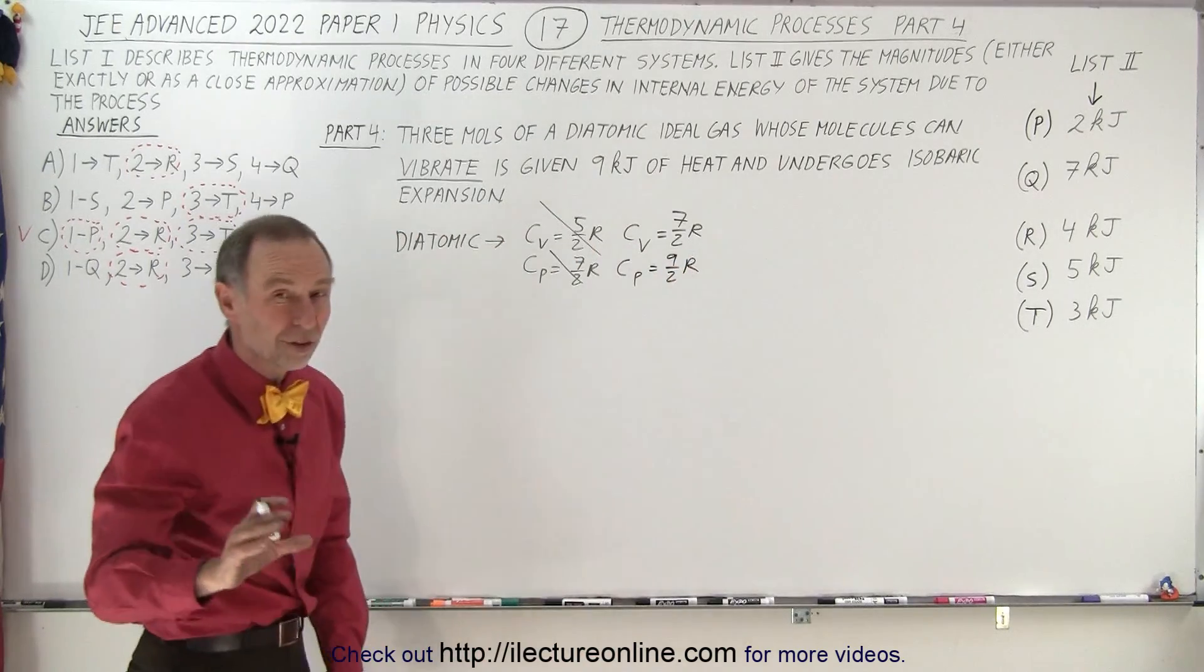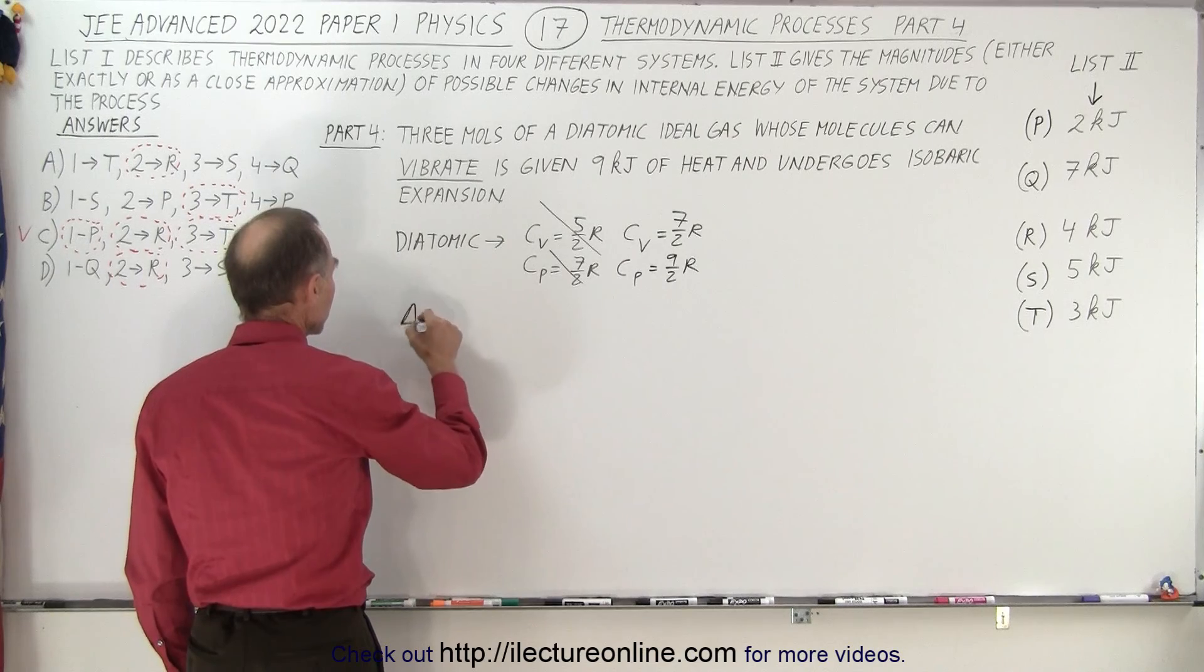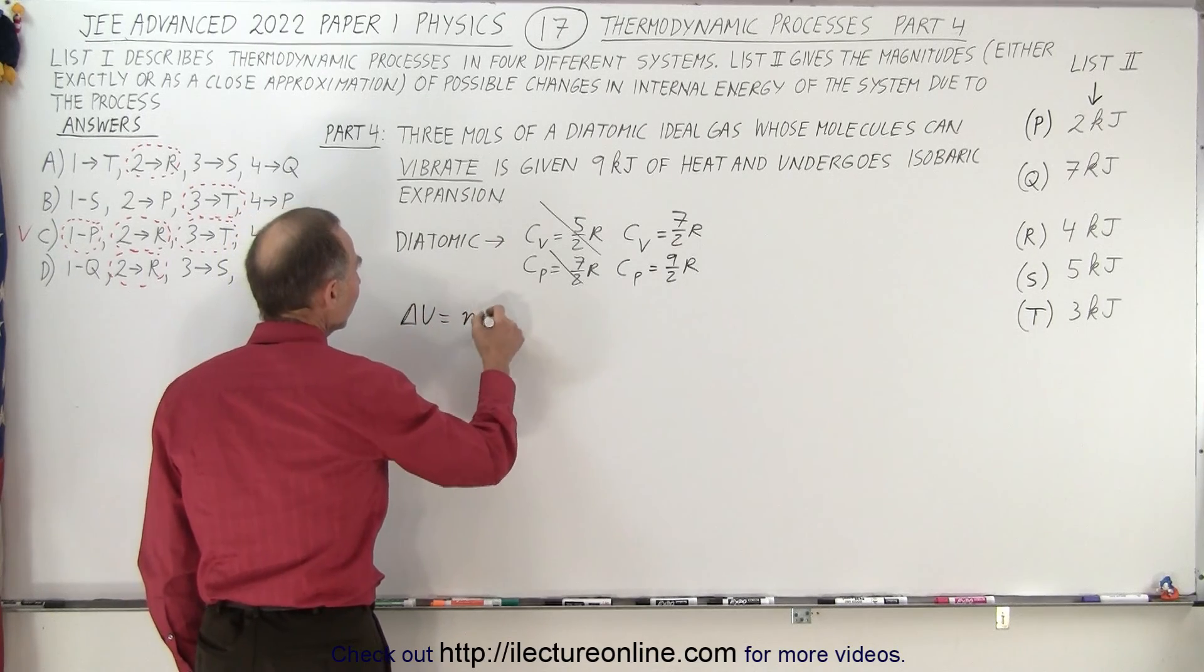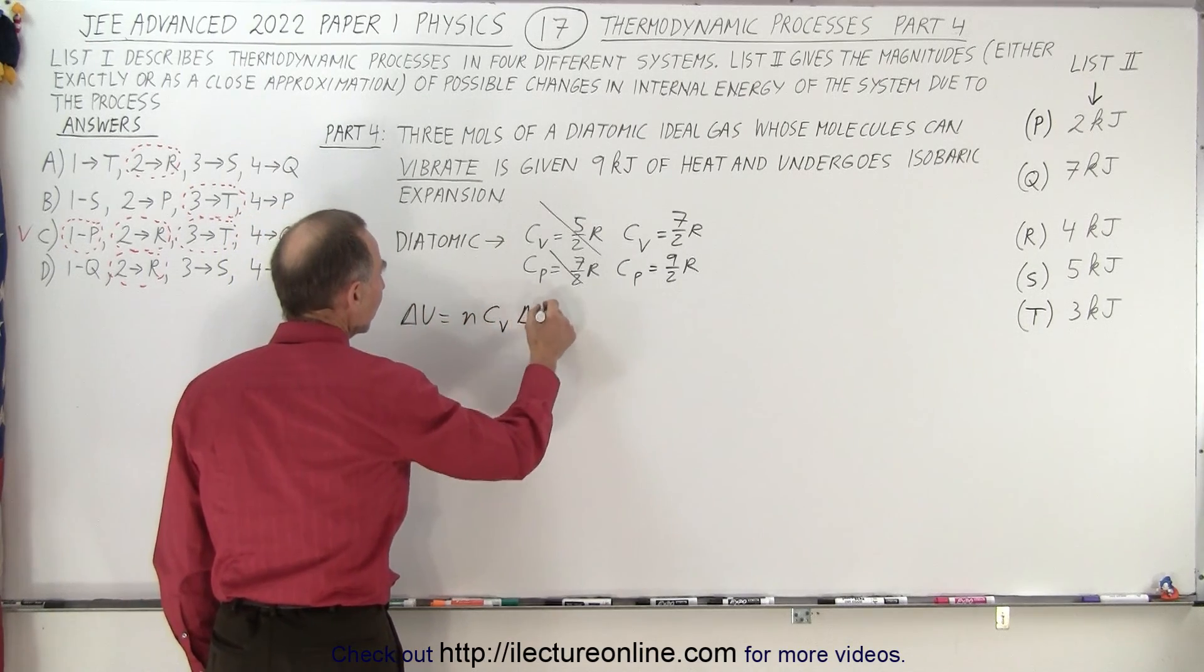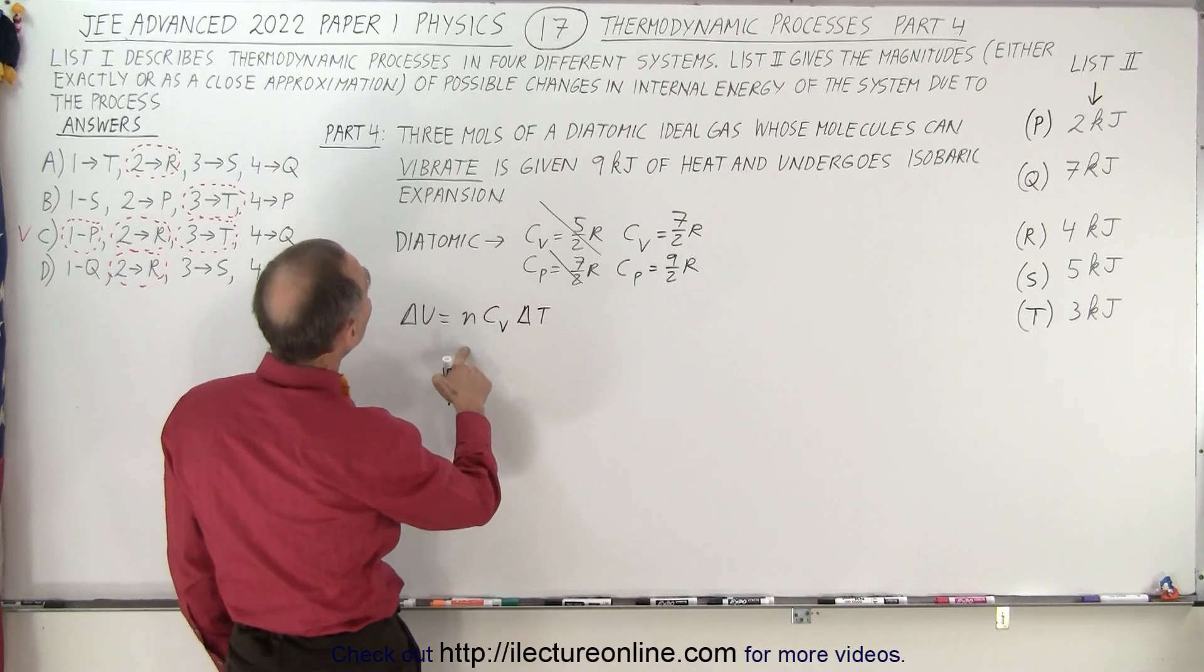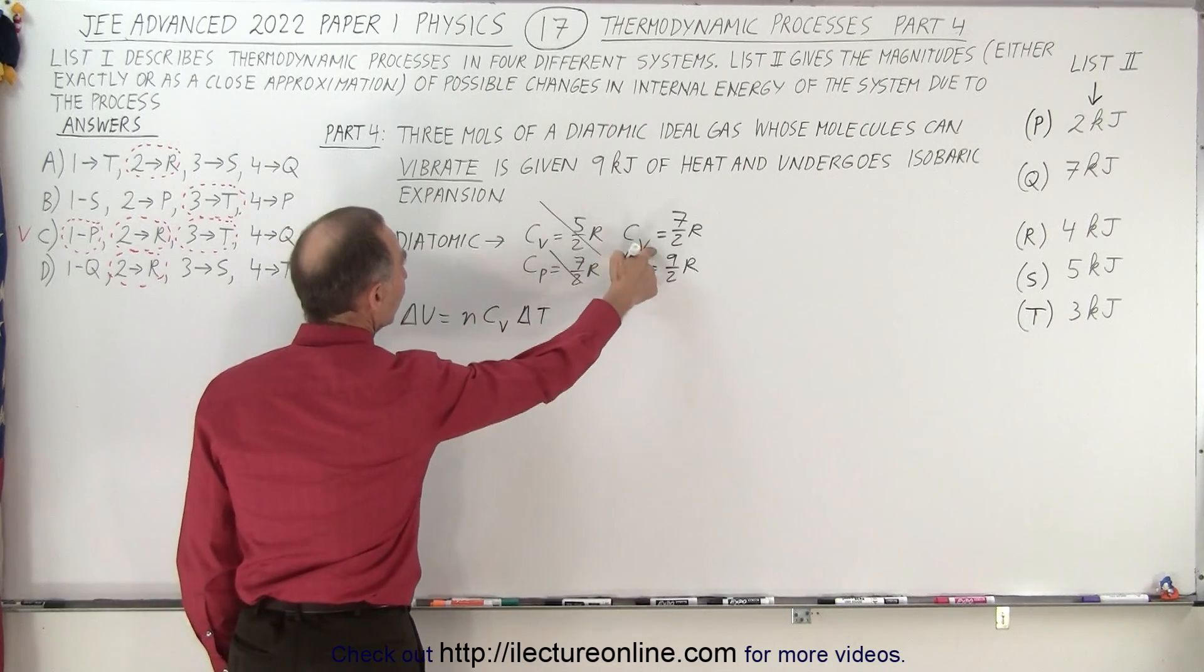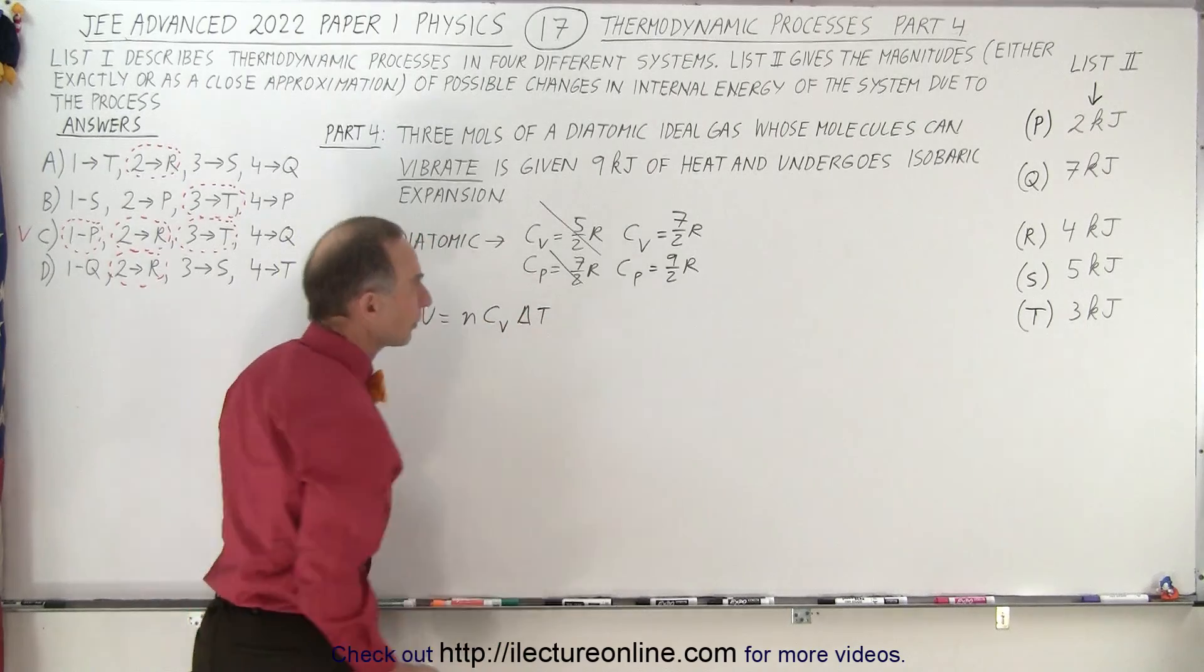All right, so since we're looking for the change in internal energy delta U that is equal to N C sub V times delta T. Now they do tell us the number of moles, we now know our C sub V, but we don't know the delta T.